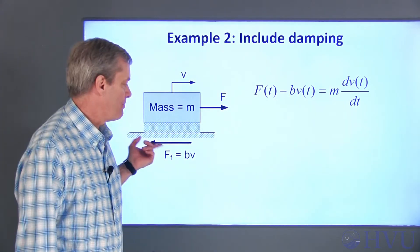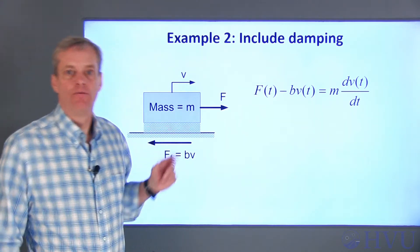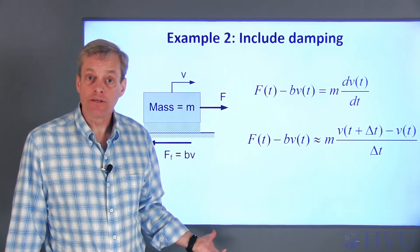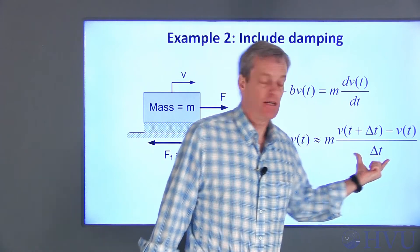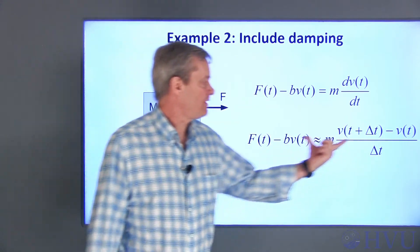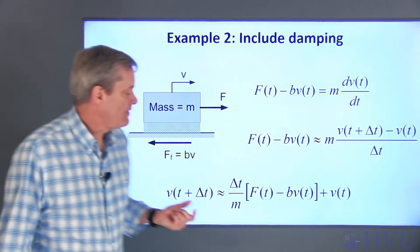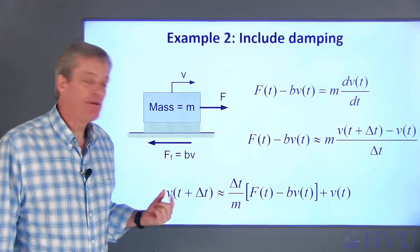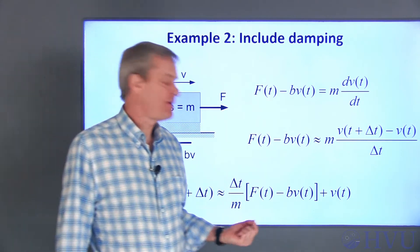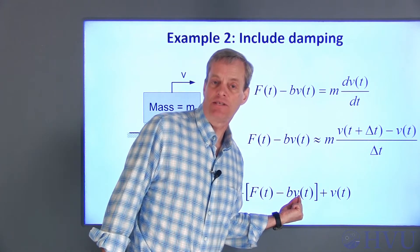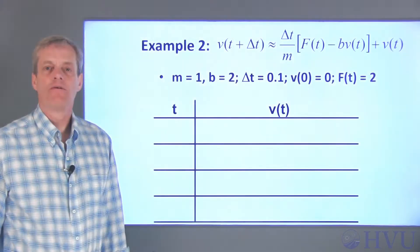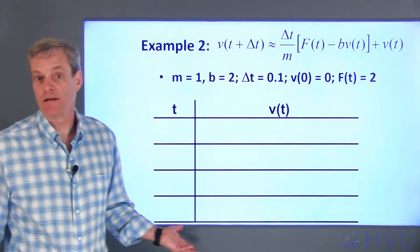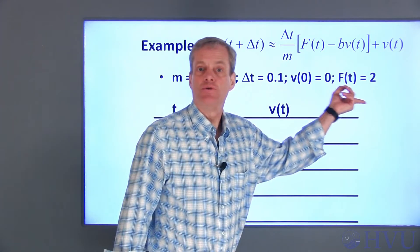Now let's add damping to the example as in example 2 of the previous video. All we do is substitute the approximation to the derivative into the damped equation and solve for velocity at time t plus delta t. The velocity at the next time step now not only involves the slope at the previous time step, but also depends on the velocity at the previous time step. These are the parameters I'll use in this example.